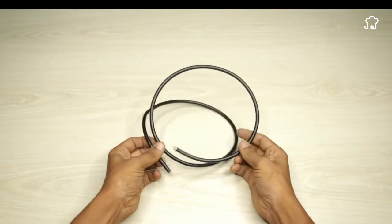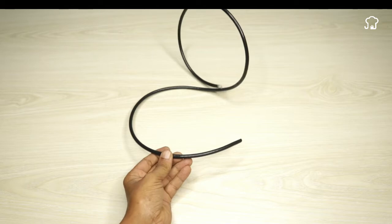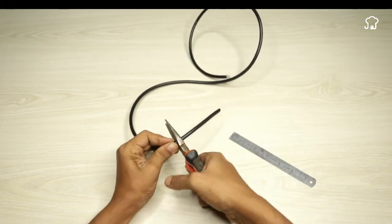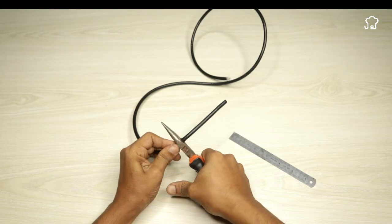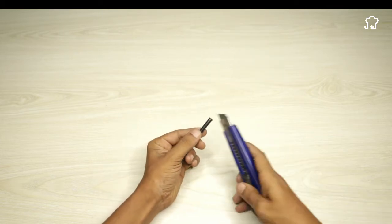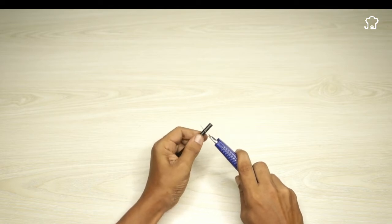Next we will take a coaxial cable and, with the help of a ruler, measure 10 cm from one end and cut it. Using a cutter, we will carefully remove the plastic from the tip of the cable, exposing the inner conductor. This conductor will be inserted into the feeder and secured with a screw.